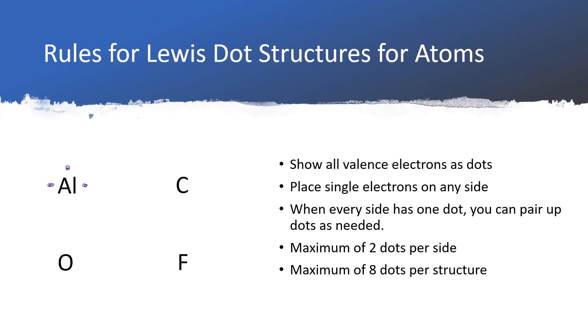For carbon, which is in group 14, there are four valence electrons, and so we'll draw the electrons as one on each side.